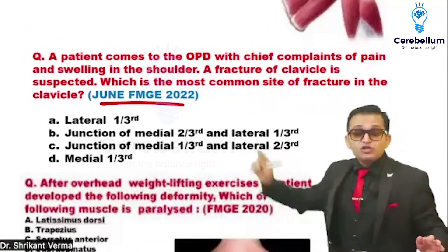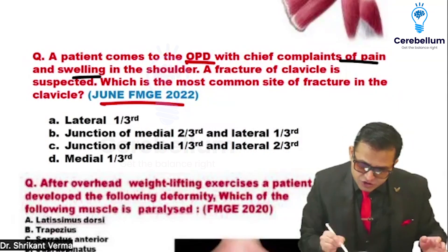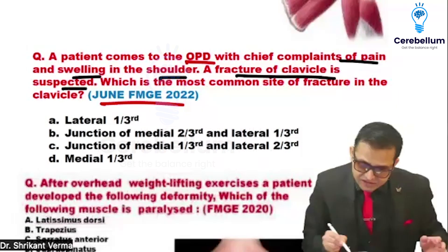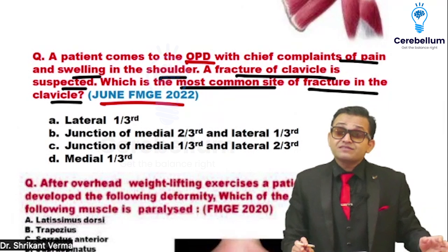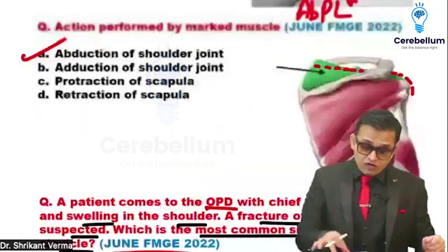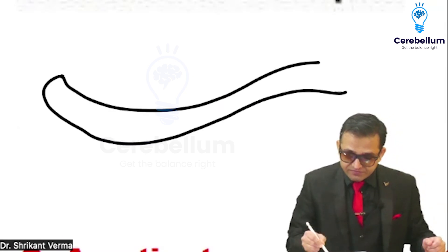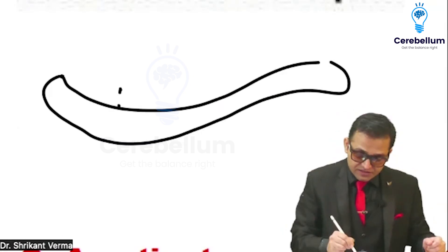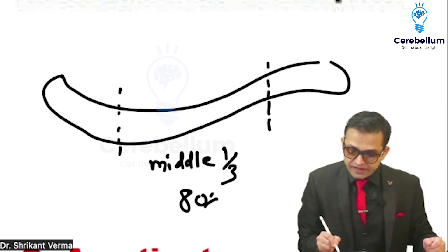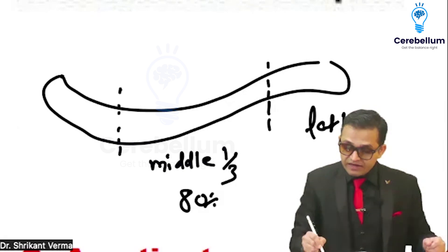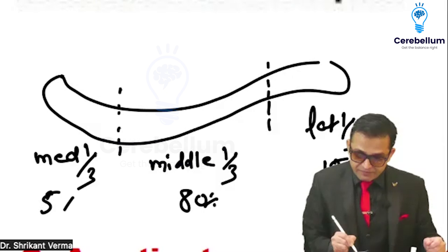A controversial question from FMG June 2022: a patient comes to OPD with pain and swelling in the shoulder, and a fracture of the clavicle is suspected — what is the most common site of fracture? Using the Allman classification: medial one-third is 5%, lateral one-third is 15%, and the middle one-third is 80%.